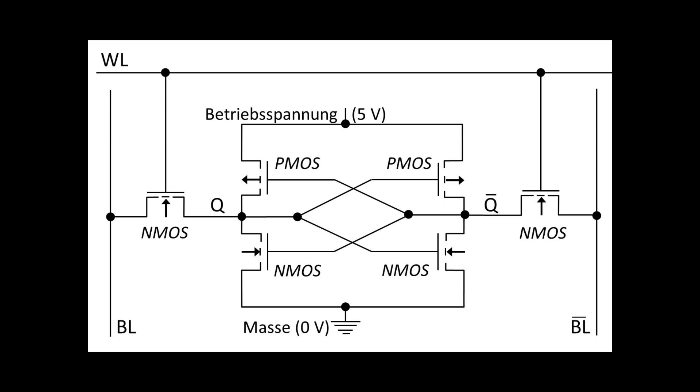So we have here a perfect CMOS circuit for such an SRAM cell, which also comprises 1, 2, 3, 4, 5, 6 transistors.